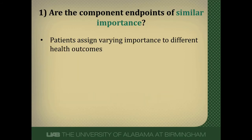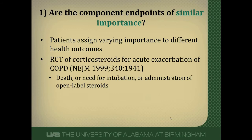Let's go through each question individually. First: are each of the components of the composite of similar importance to the patient? Patients assign varying importance to different health outcomes. Consider a randomized control trial of steroids for acute exacerbation of COPD, where the composite was death, need for intubation, or administration of open-label steroids. This is clearly a bad composite — patients would much more prefer to be prescribed open-label steroids than to die, and they'd take intubation over dying. So patients would not say all these things are equal.